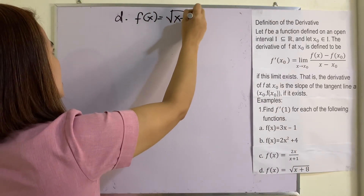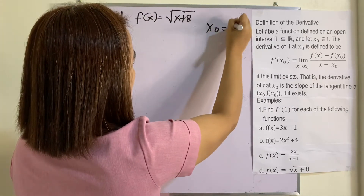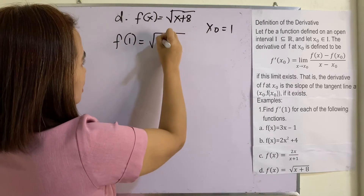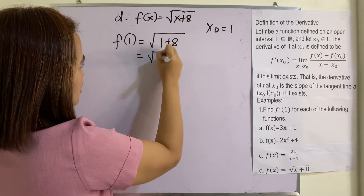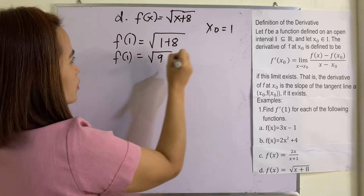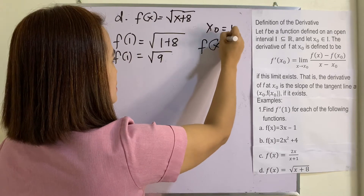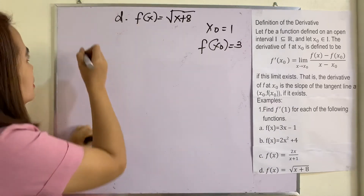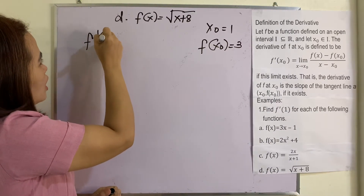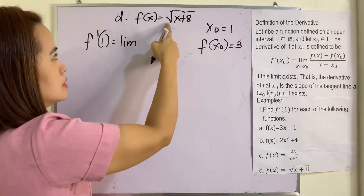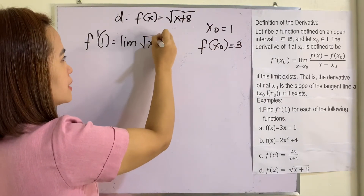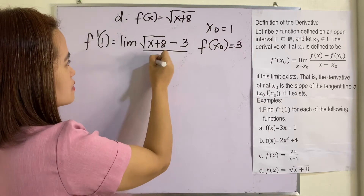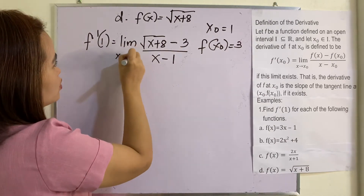Example D: f of x is equal to the square root of x plus eight. Our x sub zero is one. Finding f of one: the square root of one plus eight equals the square root of nine, so f of one equals three. Therefore f of x sub zero equals three. Now let's find f prime of one: the limit of the square root of (x plus eight) minus three over x minus one as x approaches one.